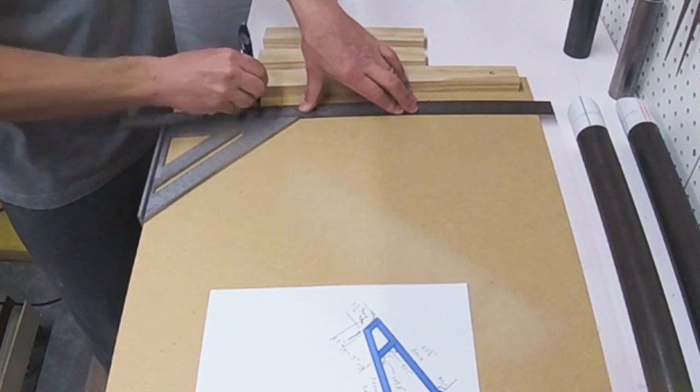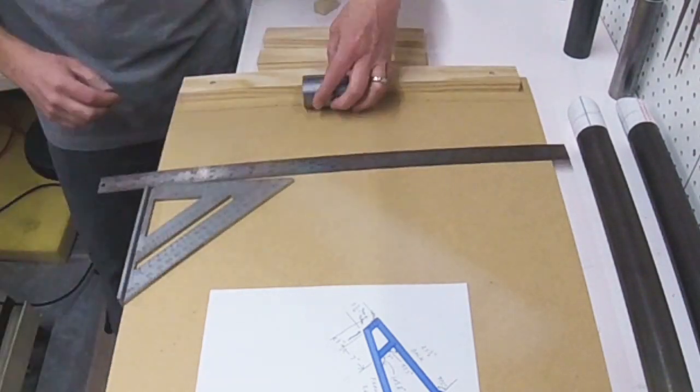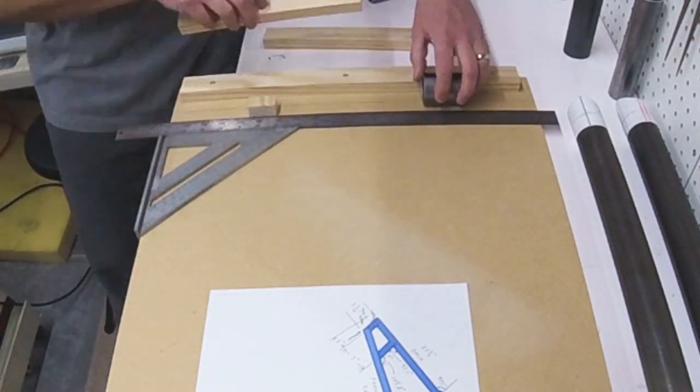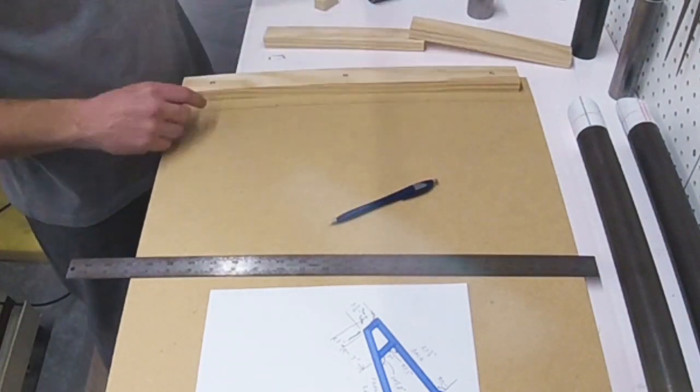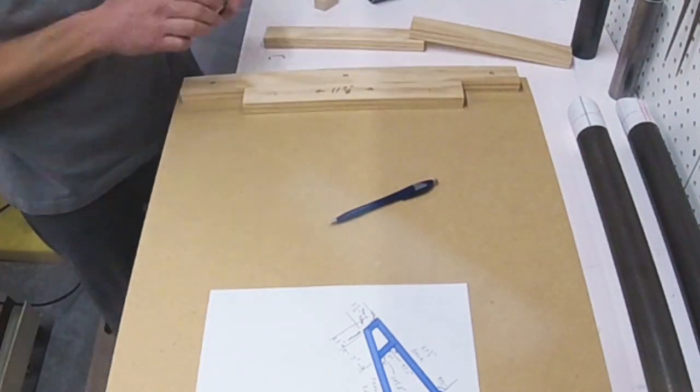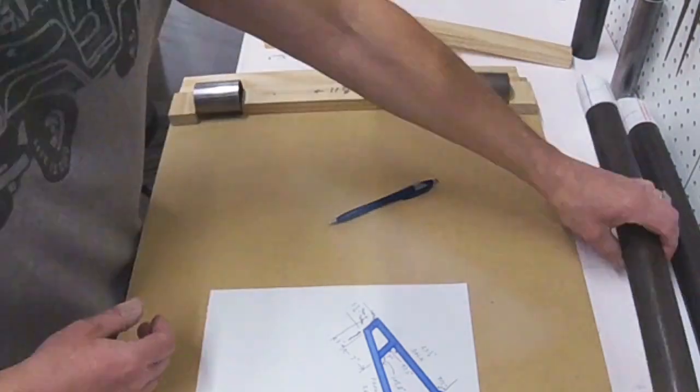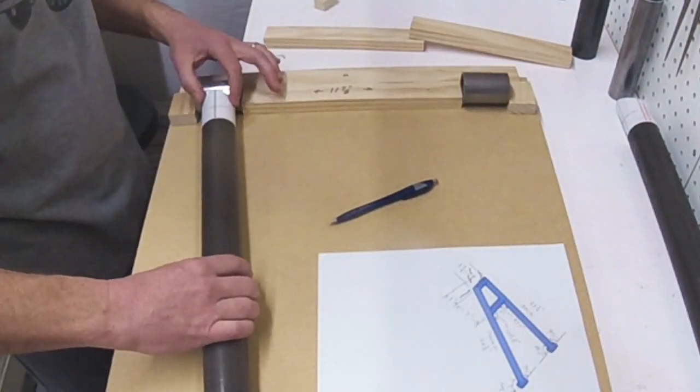So the material that I'm working with here is 3/4 inch masonite that I just picked up at Home Depot. They sell them in 4 by 8 sheets. I knew that I was going to need a 30 inch by 20 inch piece, so I just had them rip it down for me at the store.